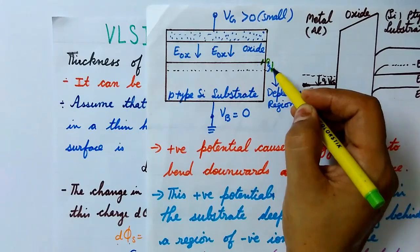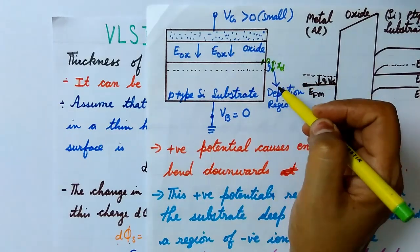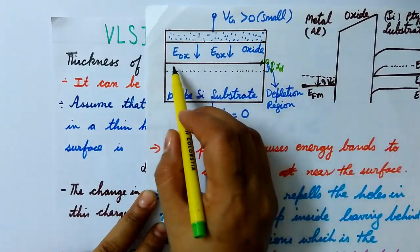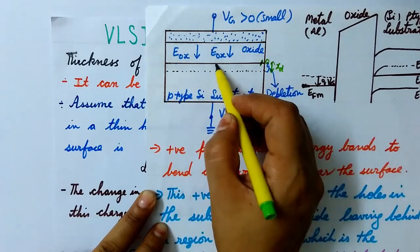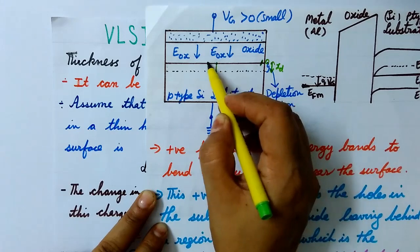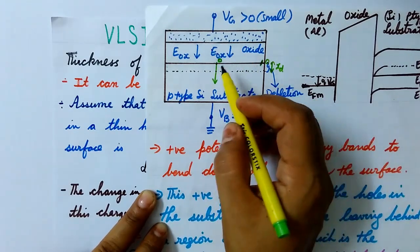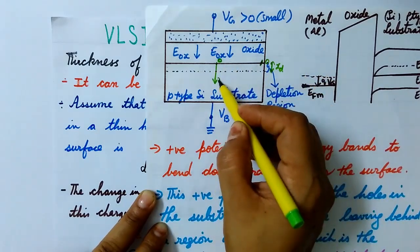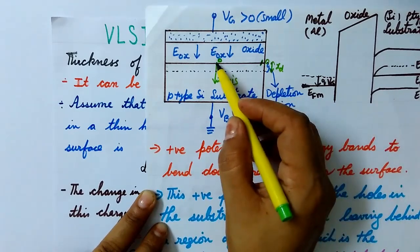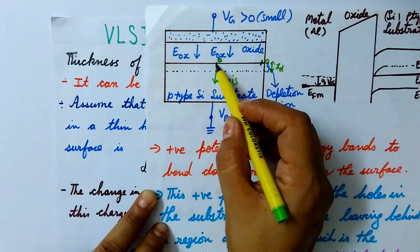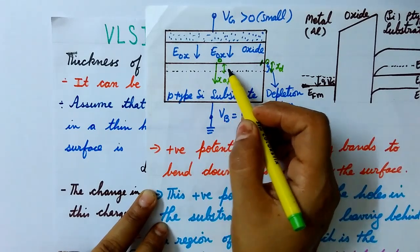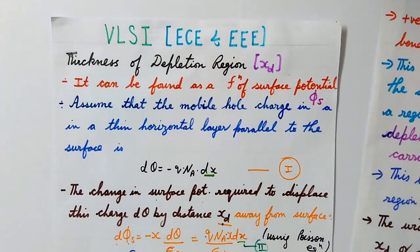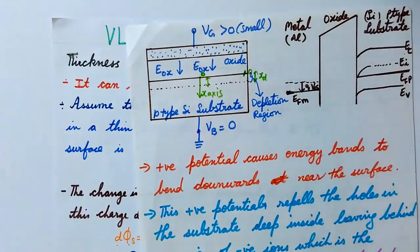We will use this principle to calculate the thickness XD of the depletion region. We assume the surface of the interface is the zero reference point, and perpendicular to this surface is the x-axis. In this direction of the x-axis we have the width XD of the depletion region, and we need to calculate this XD.